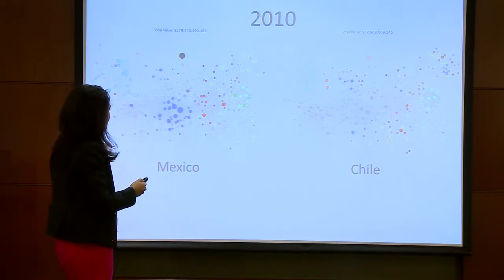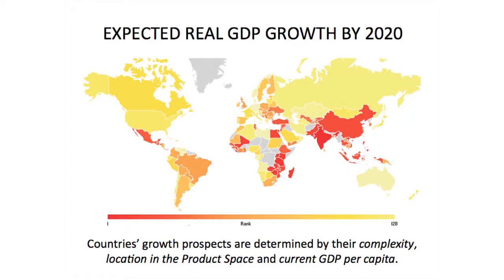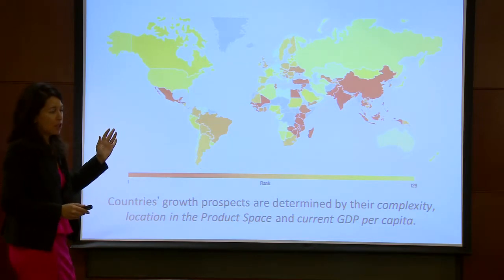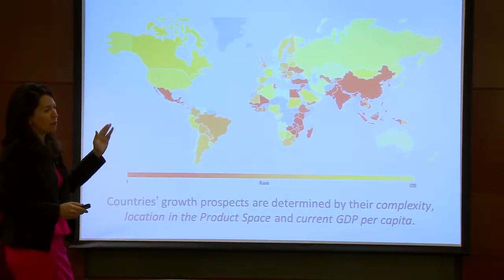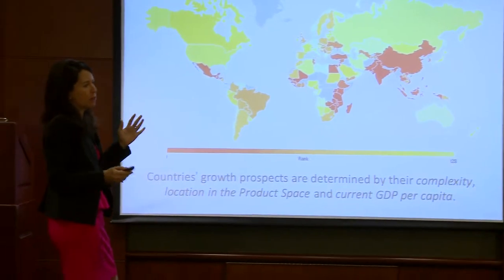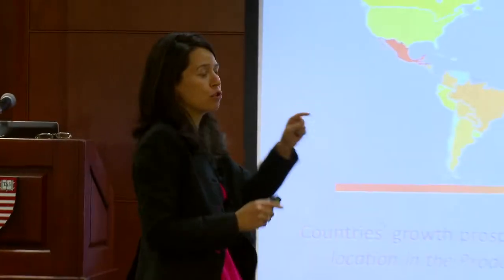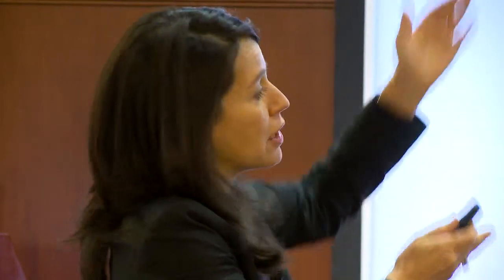Based on where you are in the product space, we can predict the growth prospects of every country in the world until 2020, available in the online Atlas. We look at the complexity of their economy, where they are in the product space, and compare that to their current GDP per capita. We expect countries much poorer than their complexity would suggest — like India and China — to accelerate growth. Countries richer than expected given their complexity — like Greece — we think will slow down.